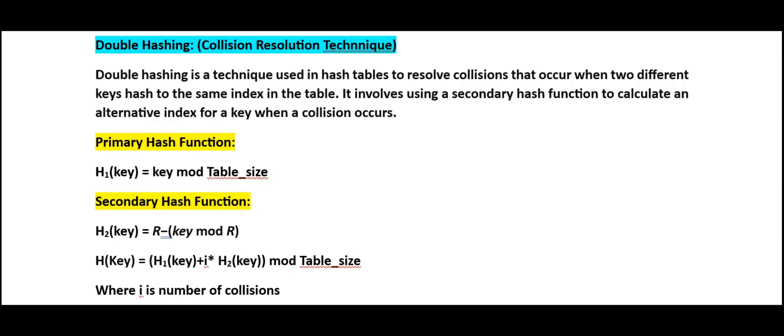In double hashing, we have a primary hash function. The choice of the hash function is your wish, but we need to make sure it possesses certain characteristics — I've discussed those in my previous video. The primary hash function is used to map keys onto the hash table, and it generally takes the form: h1(k) = key mod table_size, where the table size is generally a prime number. The secondary hash function is used only in case of collision.